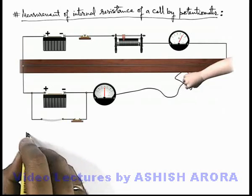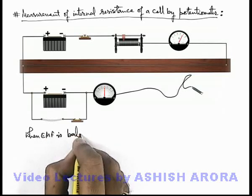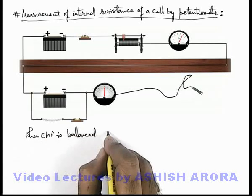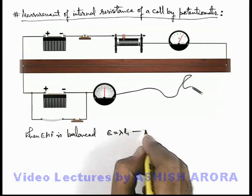Here we can say when EMF is balanced, here we can say its EMF E can be written as lambda L1, which is equation 1.